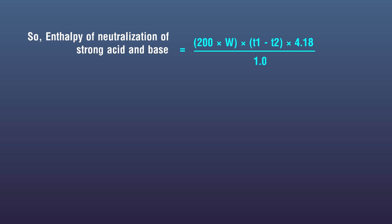Enthalpy of neutralization of strong acid and base equals 200 multiplied by W multiplied by T1 minus T2 multiplied by 4.18, whole upon 1.0 multiplied by 1000 upon 100 joules, which equals 200 multiplied by W multiplied by T1 minus T2 multiplied by 4.18, whole upon 1.0 multiplied by 100 kilojoules.